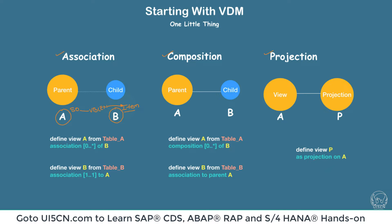There is one more piece of information we also define: how they are related in terms of cardinality. For one particular parent, how many children can be possible? For a particular sales order, we might have multiple children. Cardinality is defined in the association, and it is also an optional field — so you can omit it when defining the CDS view, in which case the default cardinality of 0 to 1 will be applied.